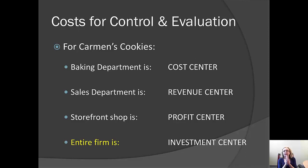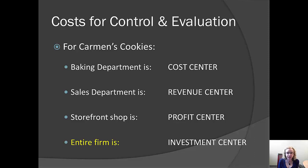Now, remember, this is not a GAAP issue. There are no accounting police that are going to come and arrest you if you evaluate a department in your organization incorrectly. The penalty, however, for making a poor choice of how to evaluate managers is that they may not work as hard as you want them to, or as hard as they could, if you were evaluating them on things over which they actually had control.